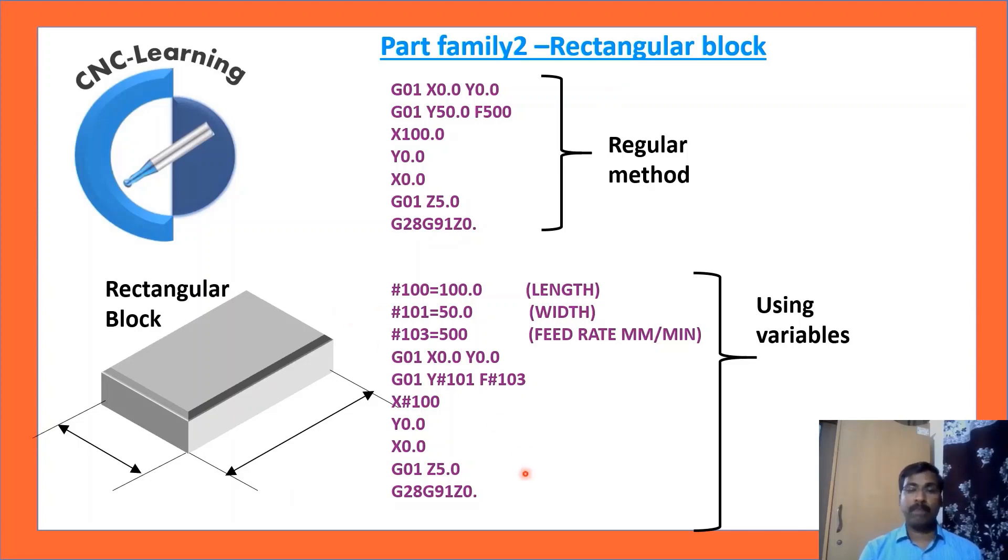So, this is how part families are defined. So, if you are doing similar kind of part again and again, you need to make the program only once. Then what you need to do is only changing the parameters. Whatever macro variables you have defined. Just changing those variables. What is given in the drawing. You have to input the values as it is mentioned in the drawing. Once you define that, your program for the next part family member would be ready.